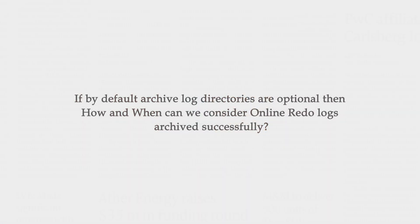If by default archive log destination directories are optional, then how and when can we consider redo logs archived successfully? I will answer this in a bit, but before that I want you to go ahead and comment if you know the answer — and if you don't, you can still come and say hi to me. What does it mean to be a mandatory archive log destination directory? As the name suggests, it is mandatory for the archiver process to write the redo logs into the directory which is defined as a mandatory archive log destination directory.